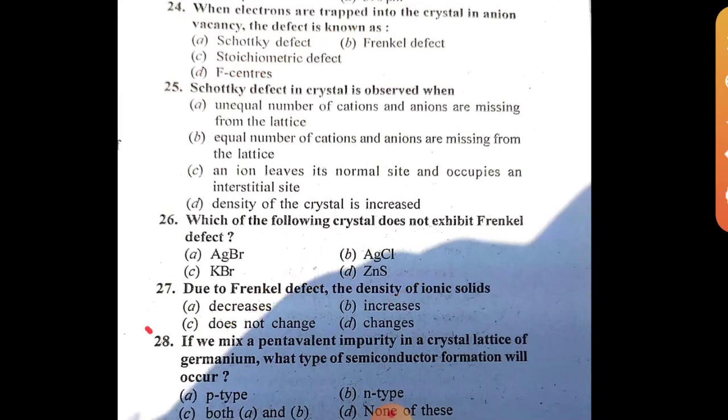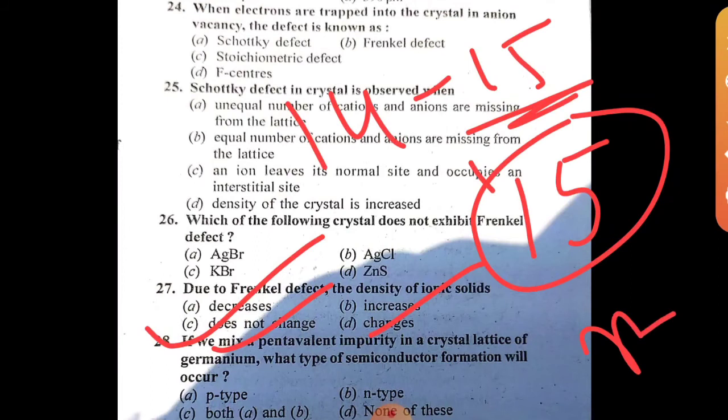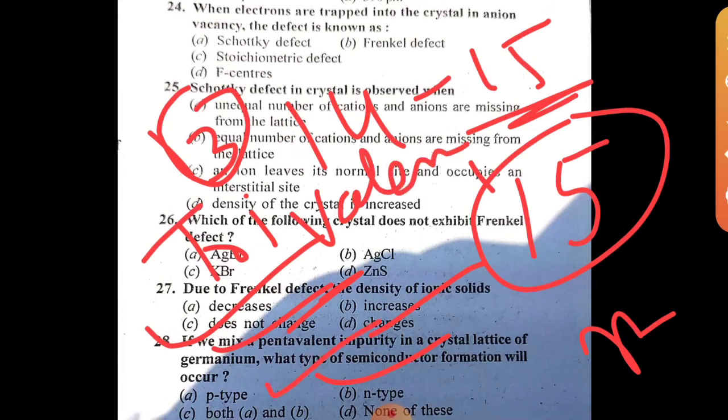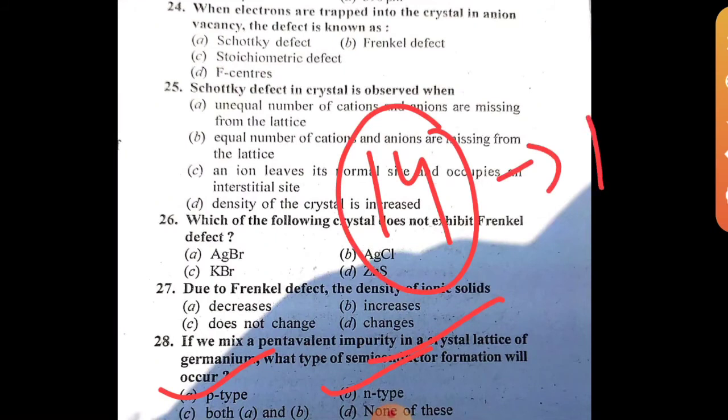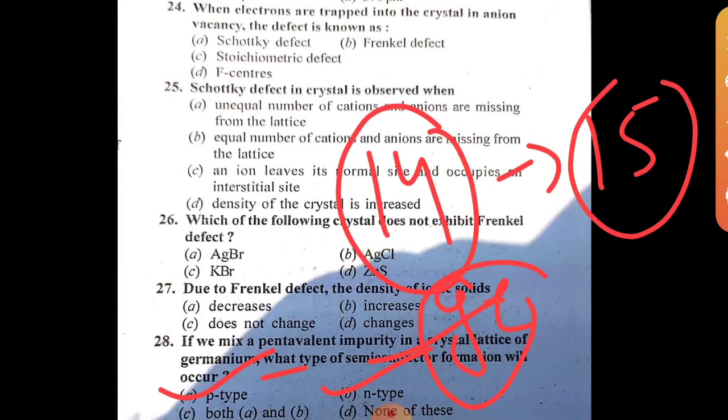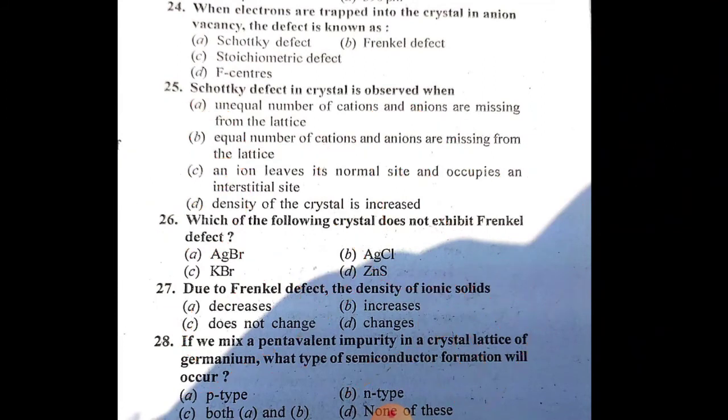Question 28: If we mix a pentavalent impurity - that's group 15 element - in the crystal lattice of germanium, what type of semiconductor will occur? When adding pentavalent impurity to group 14 element like germanium, we get n-type semiconductor. If we add group 13 trivalent impurity to group 14, we get p-type semiconductor.